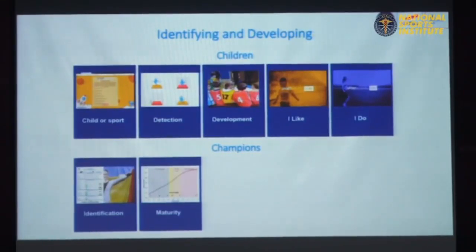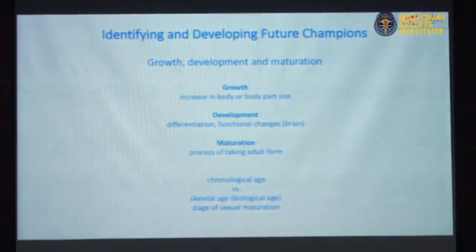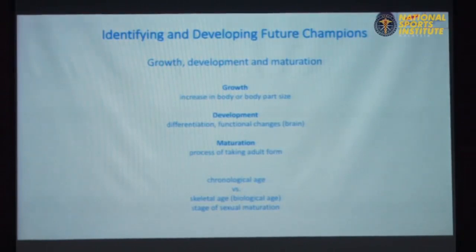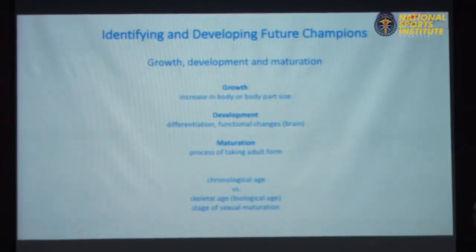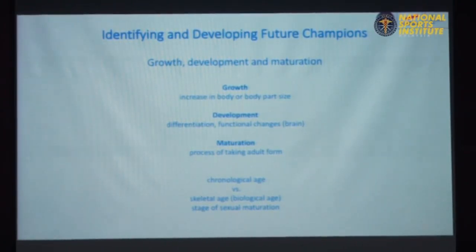Some children are late mature and grow up later. What we see is that growth, development, and maturation are different aspects. Growth is how you increase in body — you become taller, your arms become longer, and so on. Development refers to functional changes, like the brain. Maturation is how you become an adult.